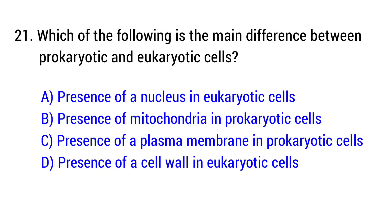Question number 21. Which of the following is the main difference between prokaryotic and eukaryotic cells? The right answer is option A, presence of a nucleus in eukaryotic cells.